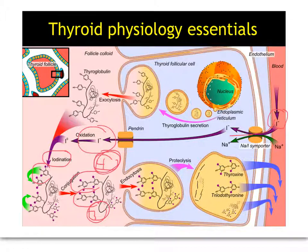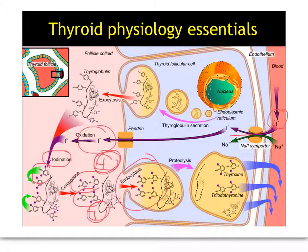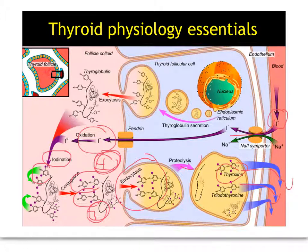Thyroxine is just the common name for tetraiodothyronine. When the thyroid needs to secrete thyroid hormone, you get this pinching off of the colloid that's inside the thyroid follicular cell, and through the process of proteolysis, thyroid hormones are released into the circulation, predominantly T4 thyroxine with some T3.